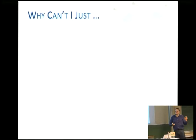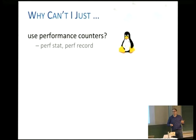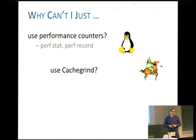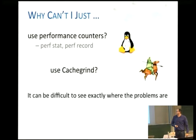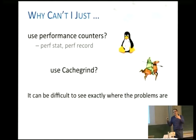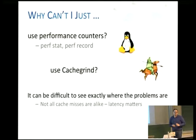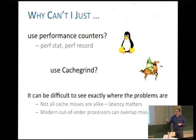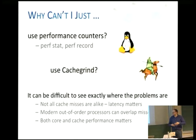Why can't I just use performance counters? Why can't I just use CacheGrind and see how my cache misses look? Well, it turns out that using these methods can be really good for software optimization, but it's difficult to do hardware-software optimization when you're trying to look at performance. The problem is that not all cache misses are alike. Sometimes you have long-latency loads, and sometimes cache misses are not very important and don't really affect performance. Modern out-of-order cores can overlap these misses, so you don't really know which ones are important. Both the core performance and the cache performance matter — they're really tightly intertwined. That's why we developed Sniper.